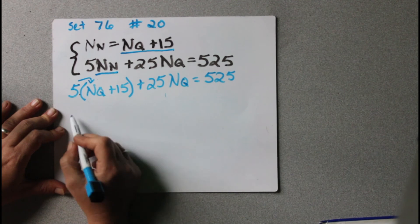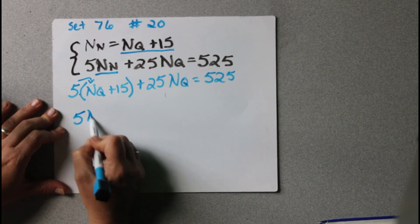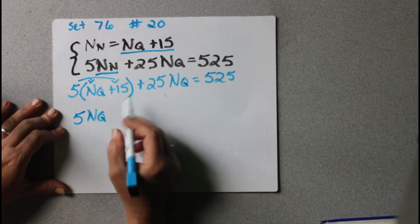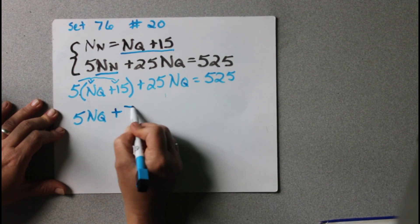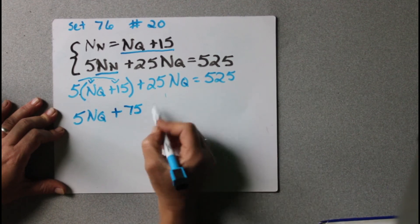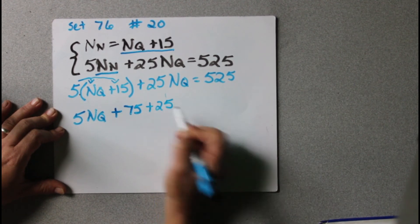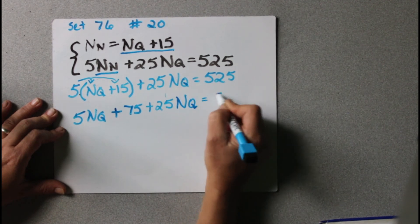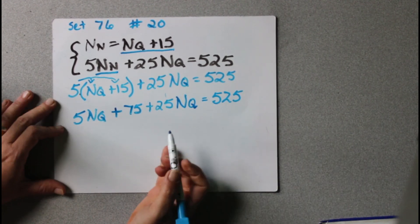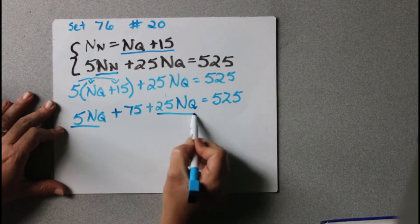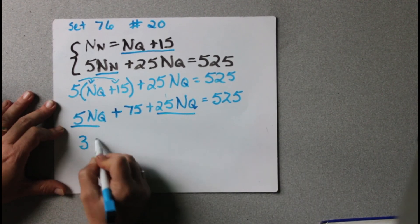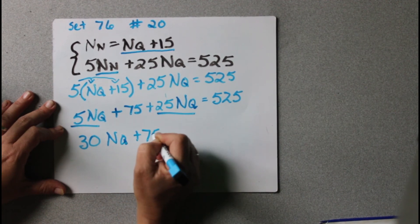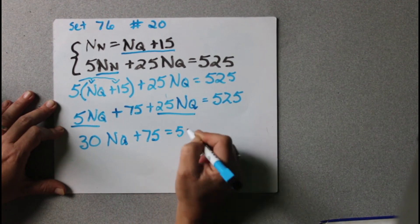So now we're just going to solve for nq. We're going to rainbow that. So 5nq. And then 5 times 15 is 75. And then plus 25. nq equals 525. So now we have to add like terms. So we get 30nq plus 75 equals 525.